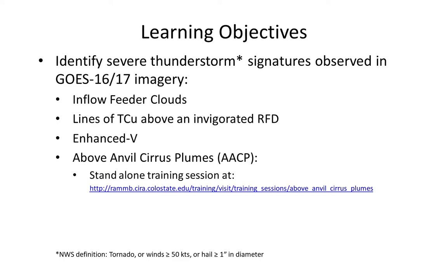These include inflow feeder clouds, lines of towering cumulus above an invigorated RFD also known as flanking towers, and the enhanced V. Outside of this particular lesson will be a stand-alone training session on above anvil cirrus plumes. The student guide for that training session can be found at the provided URL.